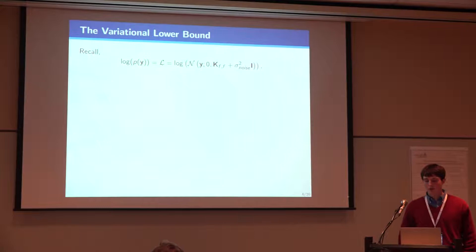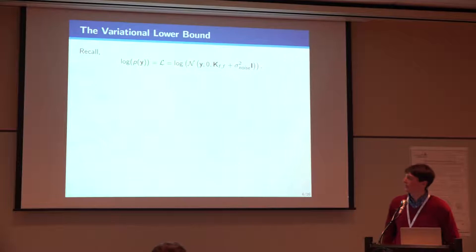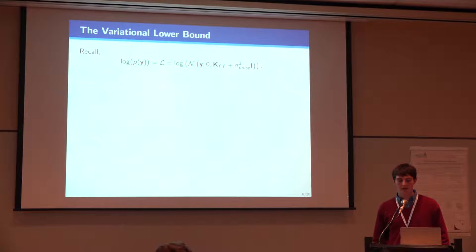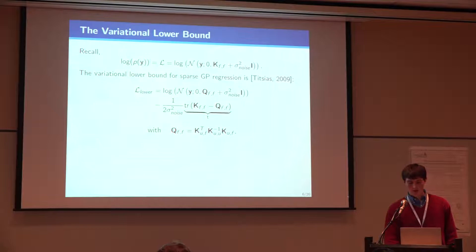For Gaussian process regression, the full log marginal likelihood is just the log of this normal density. And it depends on the matrix KFF, which is formed by looking at the covariance of the data points. And the inversion of this matrix is the main bottleneck.